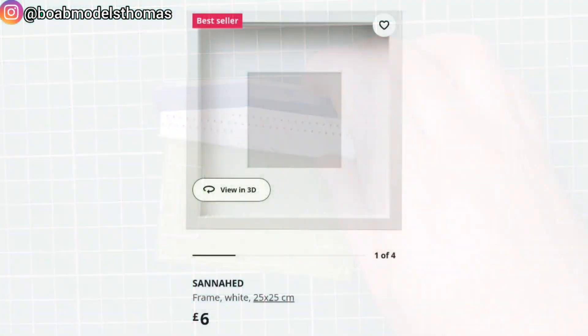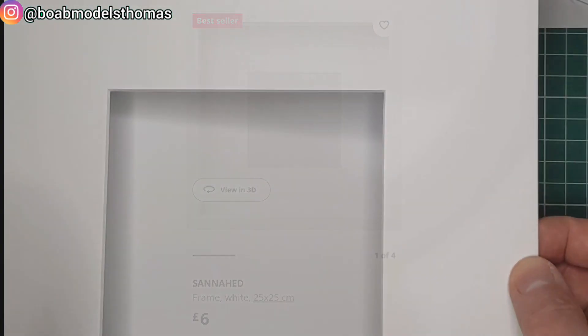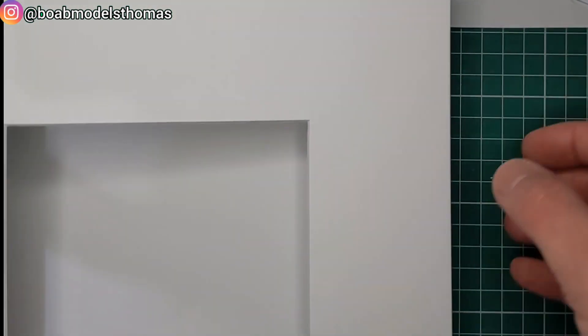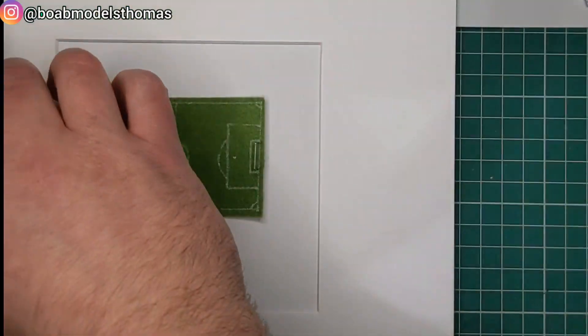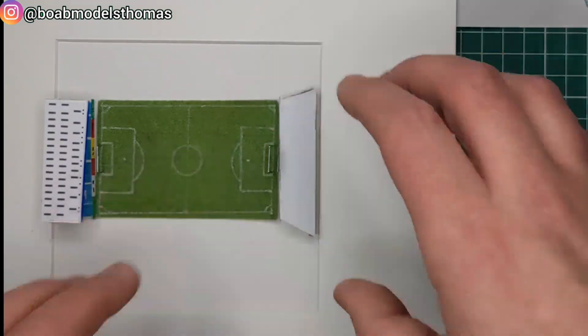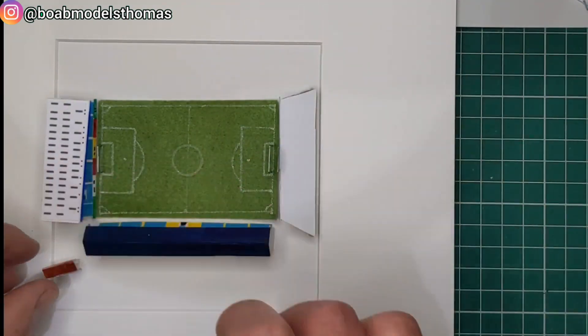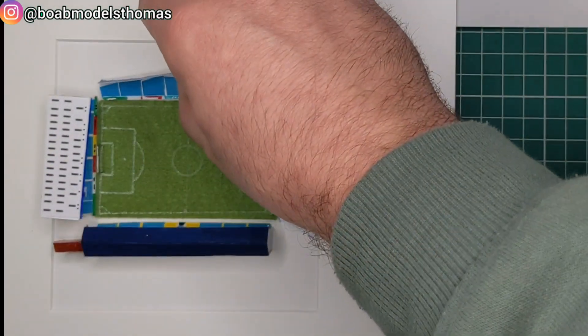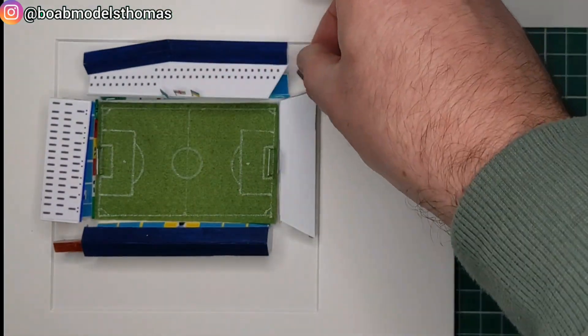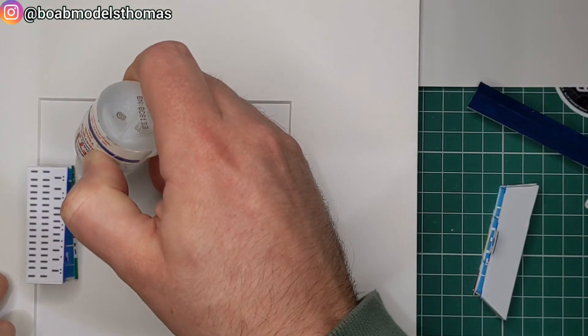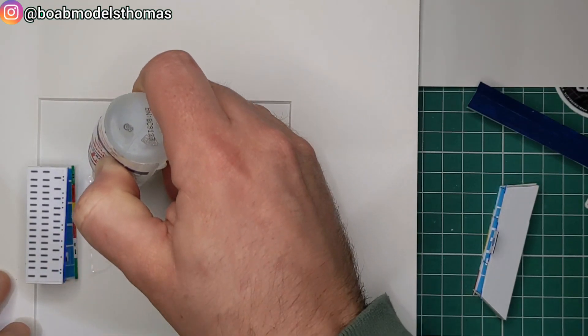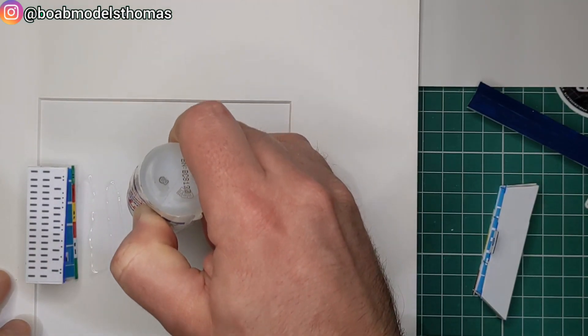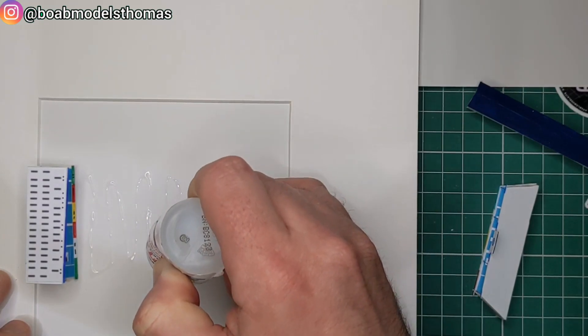I decided to display it in this £6 box frame from Ikea. It comes with this mounting card, like so, which I positioned over the top of some foam card. And here I am, positioning it all to make sure that it all fits in. I then used some superglue to fit it all down into place. I didn't want any of this peeling up after it had been put into the frame.